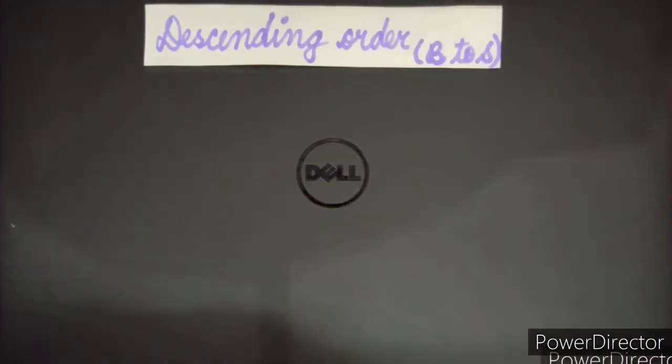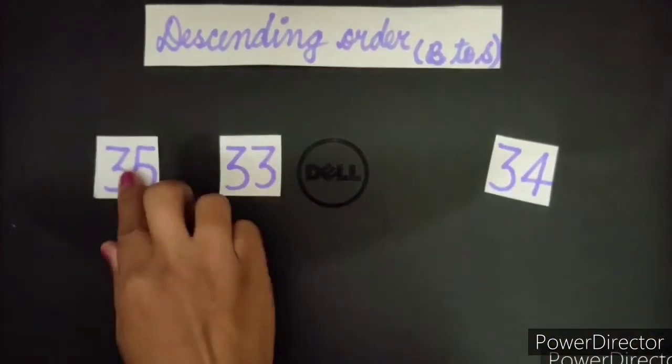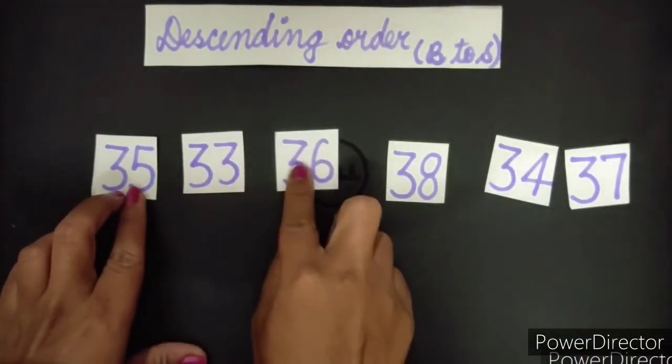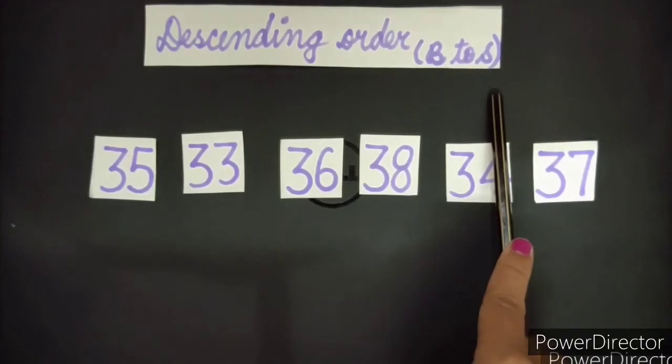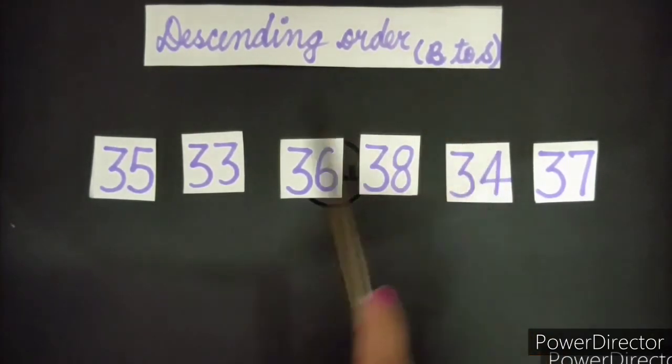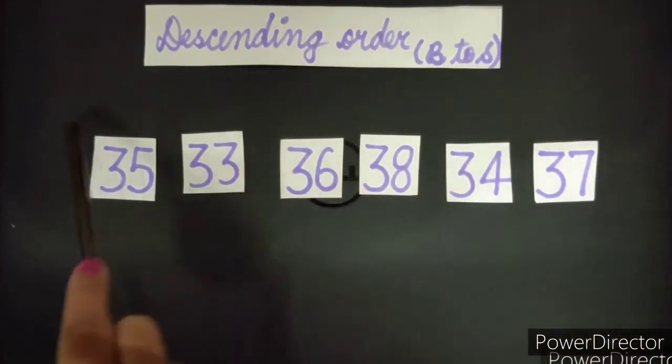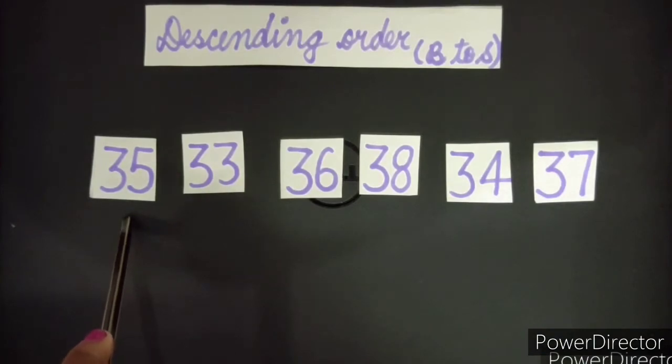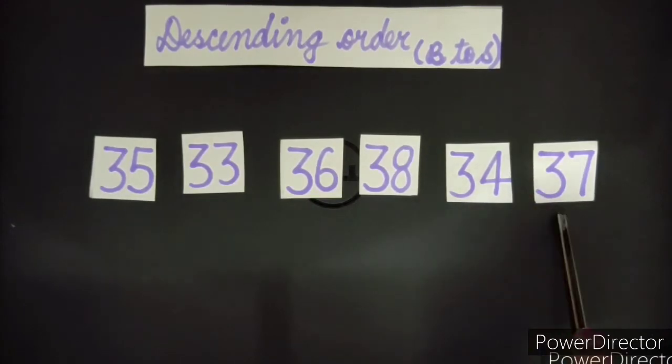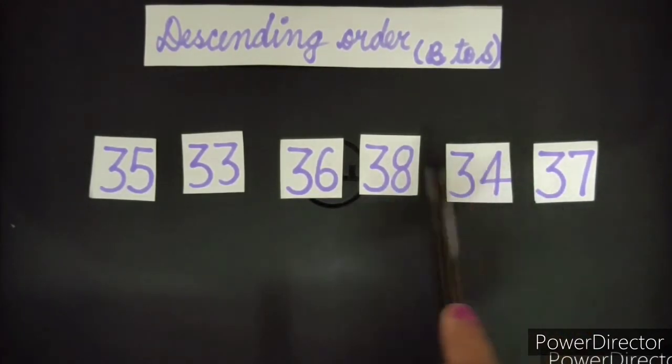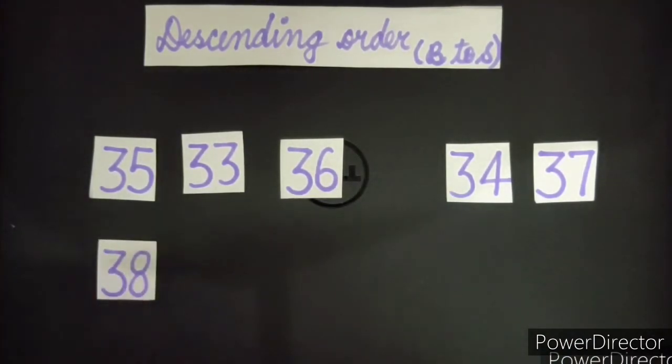Let me display some numbers. So it's descending order or we can say decreasing order. Decreasing order means big to small. So now we have to find out the biggest number among all these. Is 35 the biggest? Let's see. 33. No, it's not because 35 is bigger than 33. Then 36. Let's check 38. 38 is greater than 36. So 36 can't be. 34, 37. 34 is smaller than 38. 37 is also smaller than 38. So here the greatest number is 38.